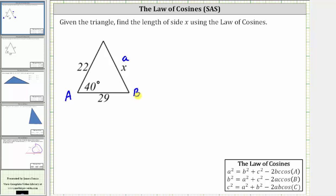If we call this angle B, the opposite side is side b with a length of 22 units. And if we call this angle C, then side c has a length of 29 units.